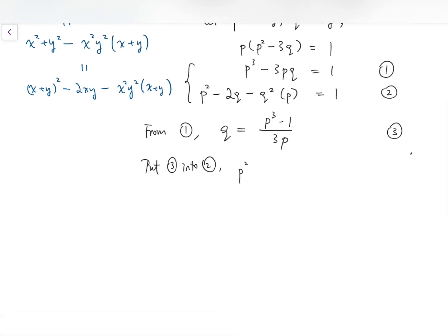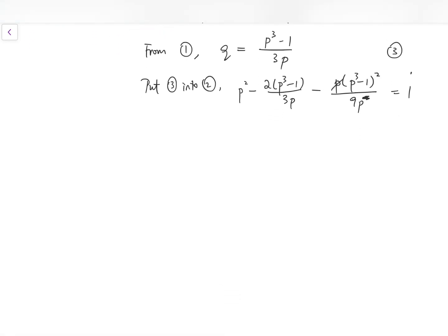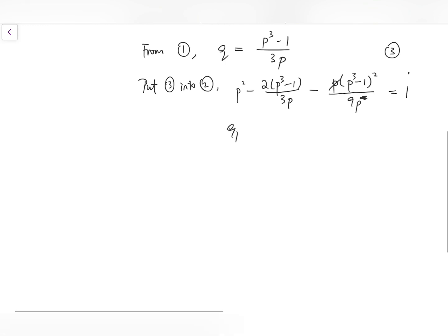Now we'll have everything in terms of p. So p squared minus 2 times p cubed minus 1 over 3p minus p times p cubed minus 1 over 9p squared equals 1. So we can simplify a bit, put away this p. So then the denominator of the third term becomes 9p. And then we can remove the denominator by multiplying both sides by 9p. So 9p cubed minus 6 times p cubed minus 1 minus p to power 6 minus 2p cubed plus 1 equals 9p.